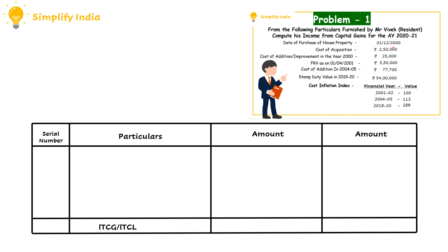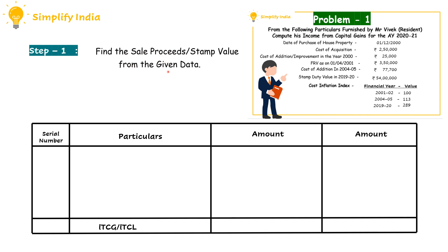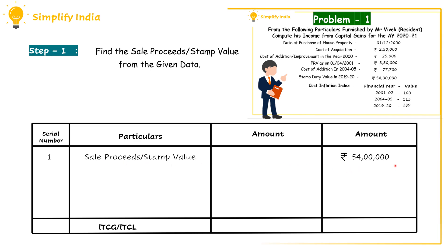Let us proceed with the solution. Step 1: finding the sales proceeds or the stamp value from the given data. In the problem, they have mentioned the stamp duty value as of 2019-20 is Rs. 54 lakh. We have to take down the sales proceeds or the stamp value and write the amount in the outer column of the format.